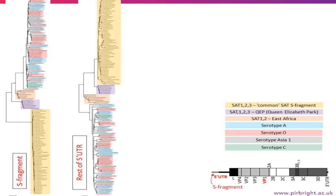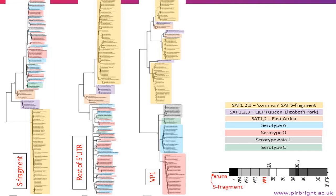If we then look at the rest of the 5' UTR, we get a pretty similar story. Then in VP1, it changes because you start to divide the groups by serotype. The colours here represent the different serotypes. But if we highlight the East African and Queen Elizabeth National Park samples, although they group by serotype, they start to fall into groups that are separate to the southern African viruses.